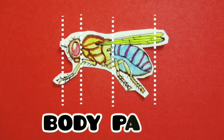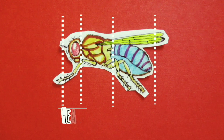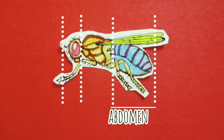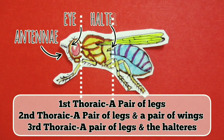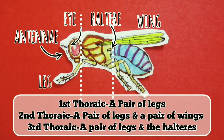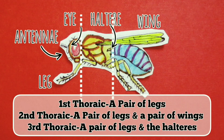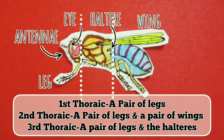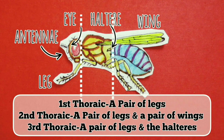We need to understand the basic body parts: head, thorax, and abdomen. The thorax consists of three segments. The first thorax segment carries a pair of legs; the second carries a pair of legs and a pair of wings; and the third carries a pair of legs and halteres — halteres are the rudiments of a second pair of wings.